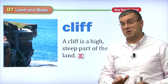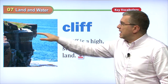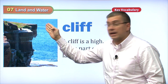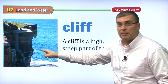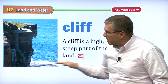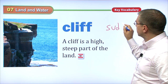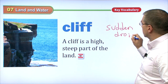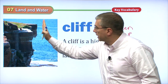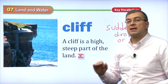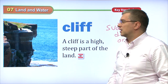A cliff can be dangerous — be careful. A cliff is a high, steep part of the land. We can also say a cliff is a sudden drop or a sudden rise in the land, depending on where you're coming from. If you're coming from this direction, the cliff is a sudden drop. But if you're coming from this way, then the cliff is a sudden rise in the land. So a cliff can be a sudden drop or rise in the land. Cliffs can be dangerous, but also cliffs can sometimes be fun.